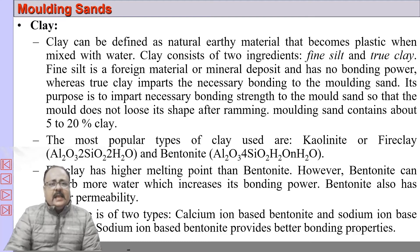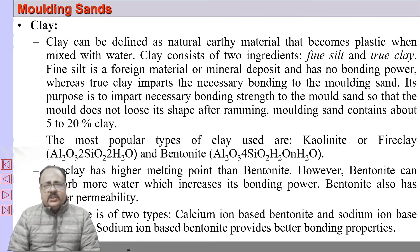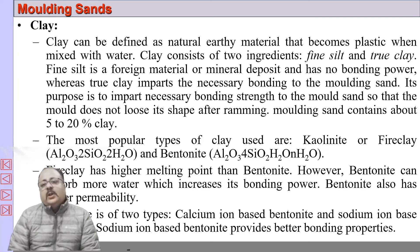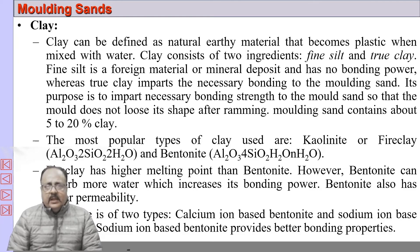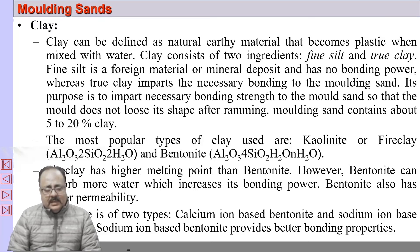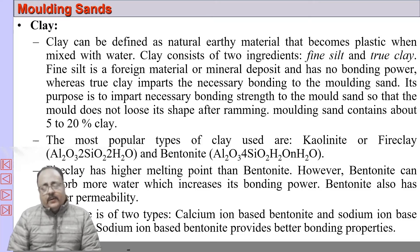We also have clay. Clay is a natural earthy material consisting of fine silt and true clay. Fine silt is a foreign material with no bonding power, but true clay is important and gets its bonding power in the presence of moisture. Clay content ranges from 5% to 20%; around 8% is recommended for normal sand casting, though this depends on whether machine molding or manual molding is used.